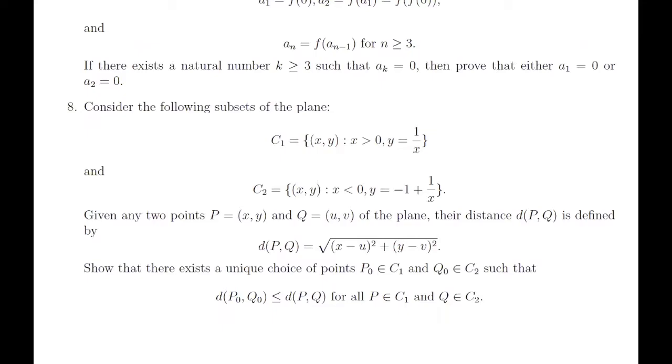And C2 contains those points where x is less than 0 and y is negative 1 plus 1 over x, and the normal definition of Euclidean distance has been defined. So the main thing we have to prove is that there exists two points, one point in C1 and another point in C2, for which the distance is minimum.